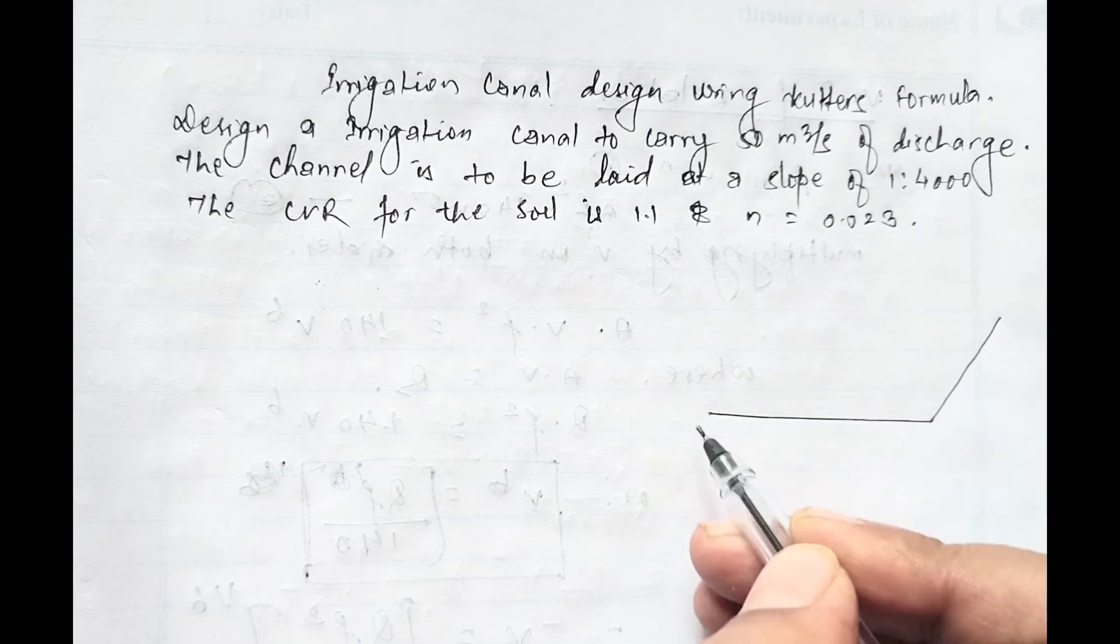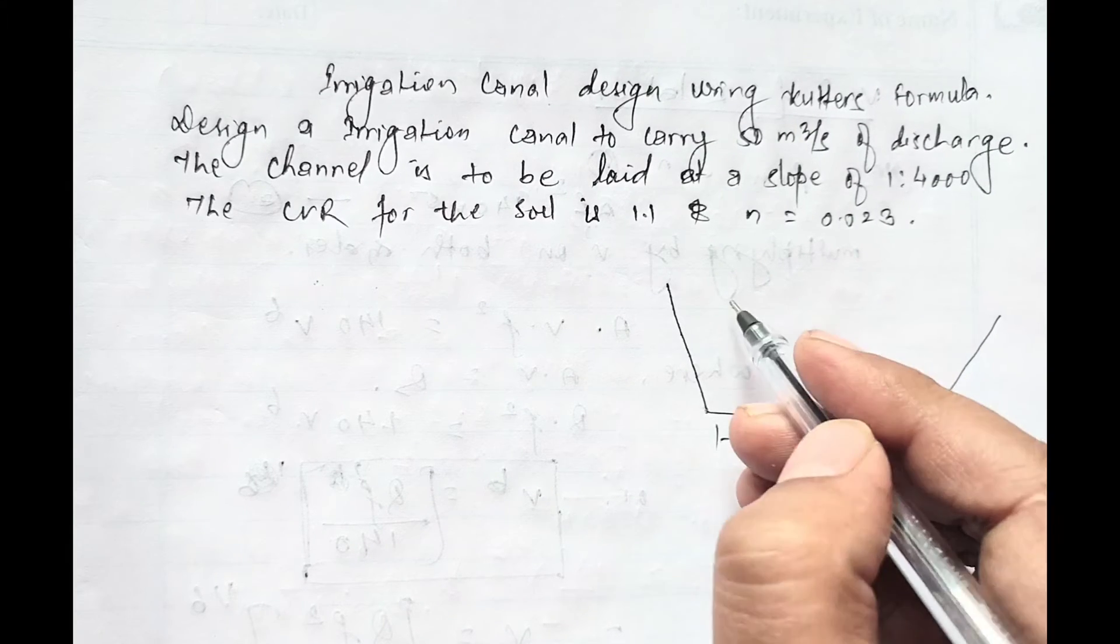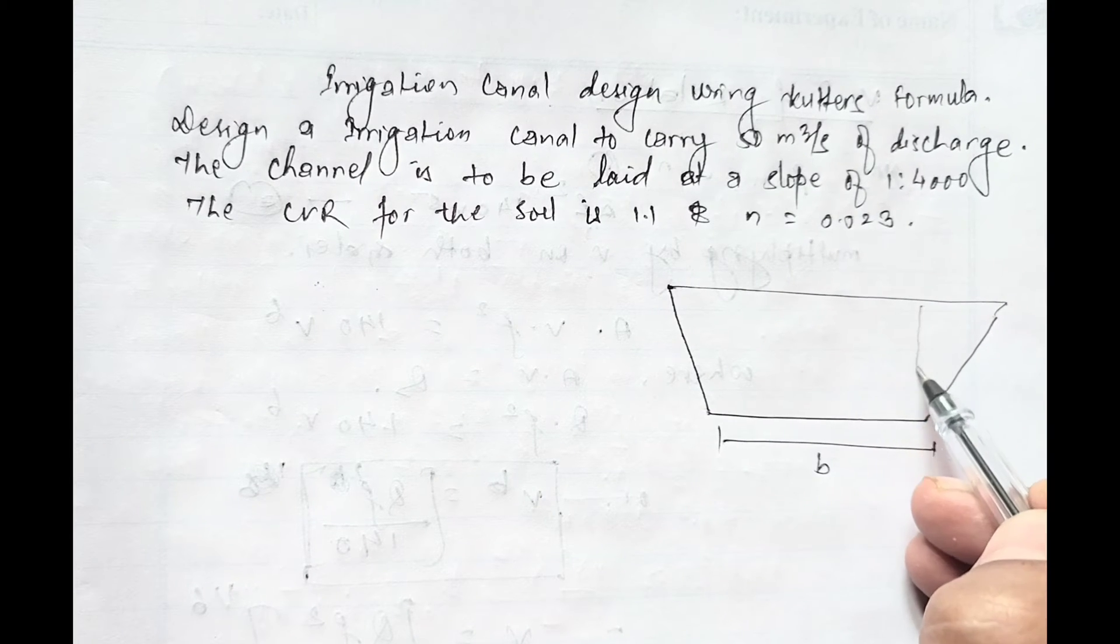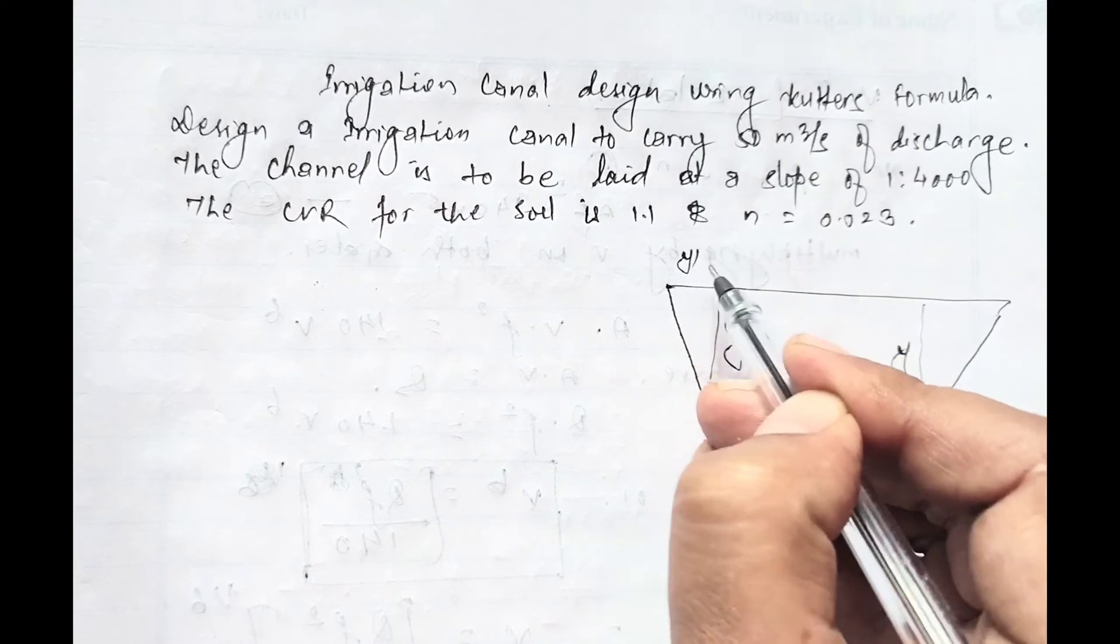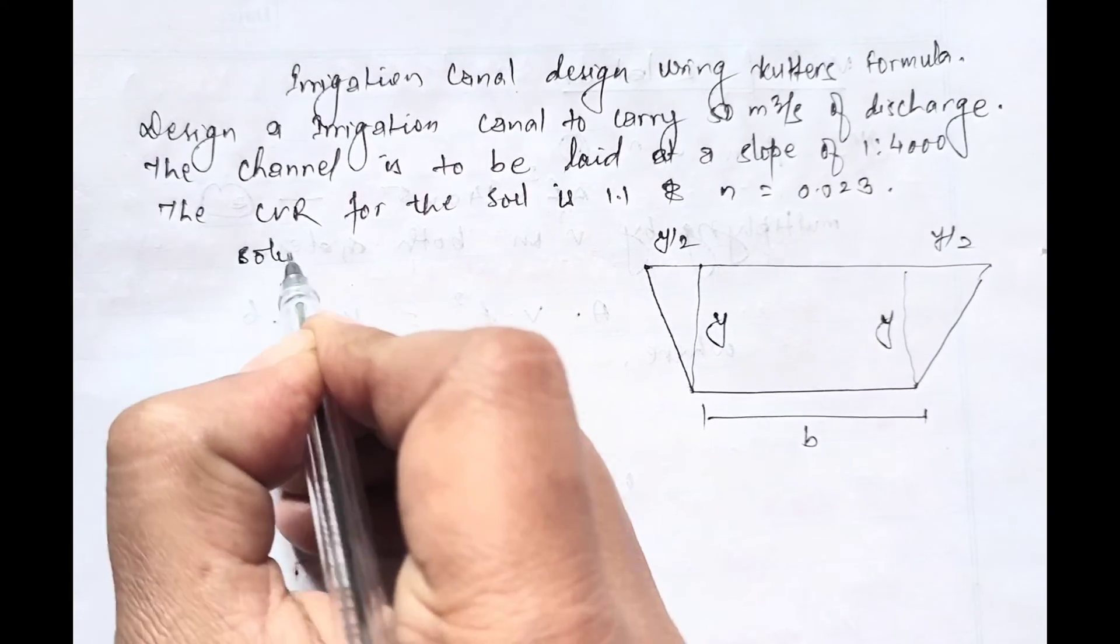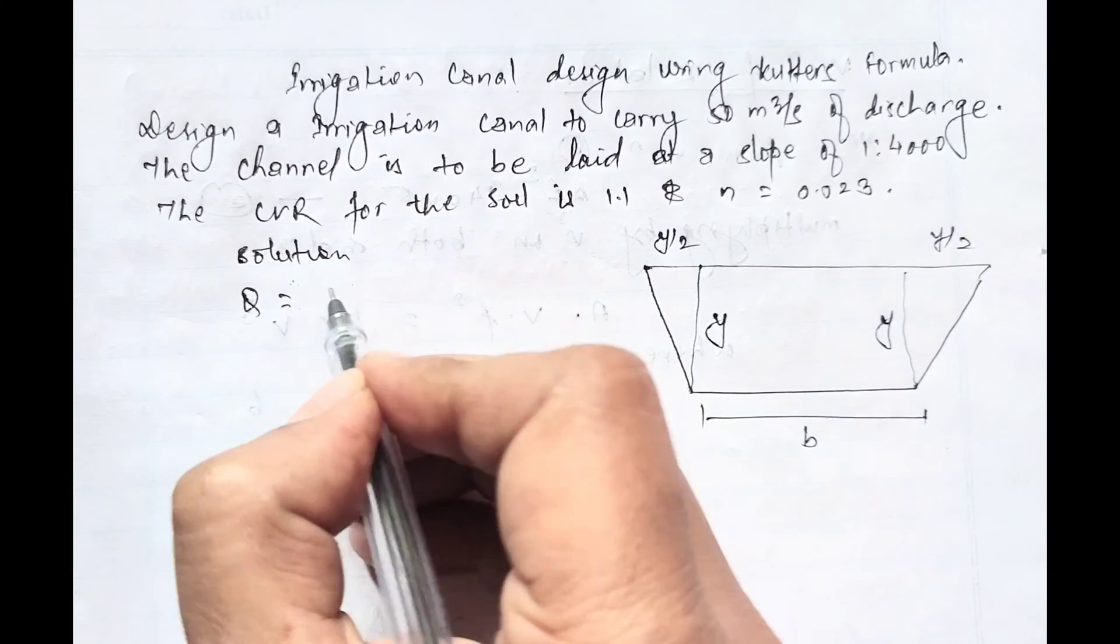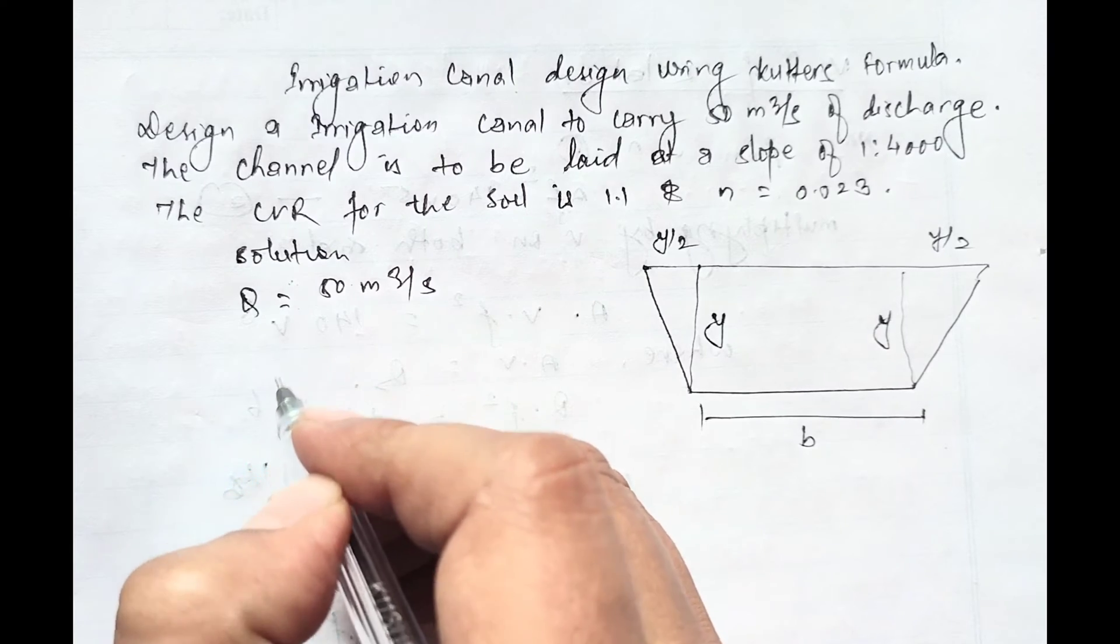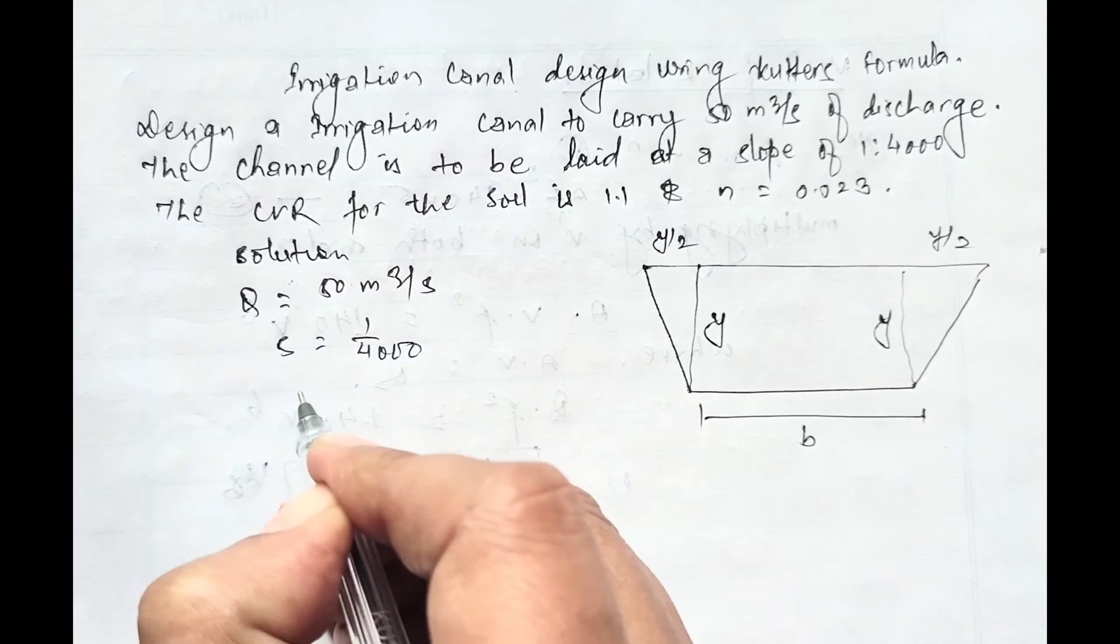The CVR (critical velocity ratio) for the soil is 1.1 and n equals 0.023. The canal formed will be a trapezoidal canal where this is the width B, this is y, depth, and this one is y by 2. So let's start solving this. First we'll carry out the given data: Q equals 50 meter cube per second, S equals 1 in 4000, m equals 1.1, and n equals 0.023.